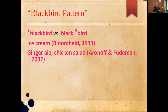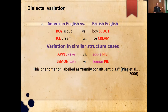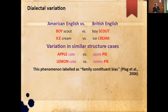Whilst investigating compounds I noticed certain variations. The first variation pertains to dialectal variation: American English versus British English — 'boy scout' versus 'boy scout', 'ice cream' versus 'ice cream'. Then there is variation in similar-structure cases: 'apple cake' but 'apple pie', 'lemon cake' versus 'lemon pie'. This last phenomenon was labeled the 'family constituent bias' by Ingo Clark and associates.